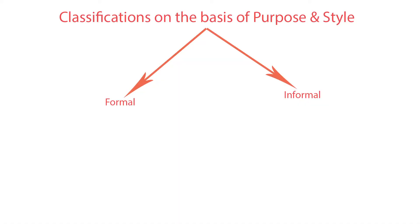Third category: classification on the basis of purpose and style. This gives us formal communication and informal communication. Formal communication follows rules and regulations.